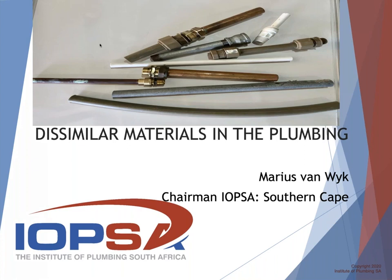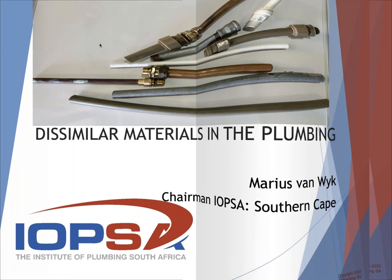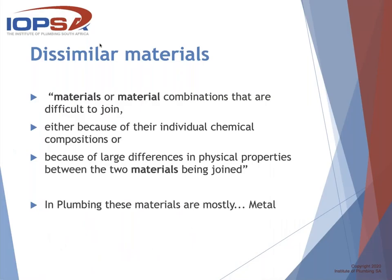Dissimilar materials, or material combinations, are difficult to join either because of their individual chemical composition or because of large differences in their physical properties between the two materials being joined. In plumbing, these materials are mostly metal.